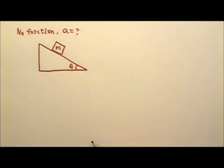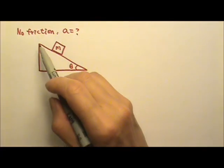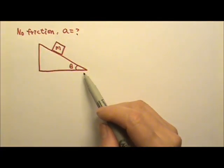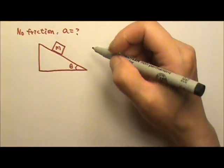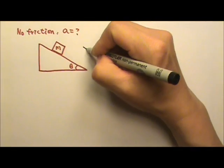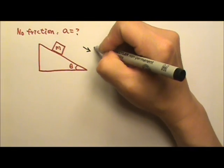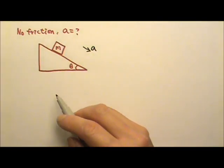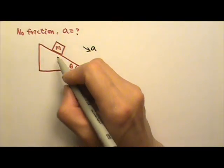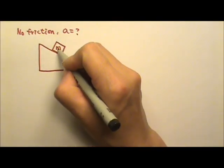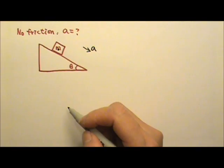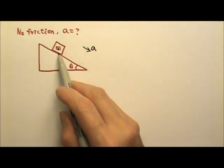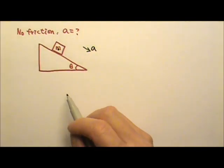We will follow the problem-solving procedures. On this slippery incline, the box is going to accelerate down the incline this way. Next we draw the force diagram. In this case, I like to draw the force diagram right on the box, so this dot is what I will use.